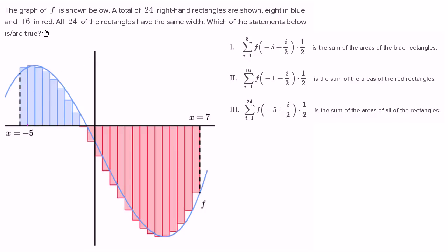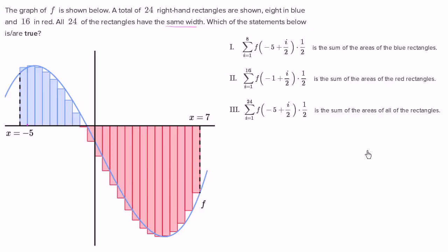Eight rectangles are in blue, sixteen are in red. All 24 of the rectangles have the same width. Which of the statements below is or are true? They give us three expressions in sigma notation. The first is the sum of the areas of the blue rectangles, the second is the sum of the areas of the red rectangles, and the third is the sum of the areas of all the rectangles. Pause the video and try to determine on your own which of the statements is or are true.